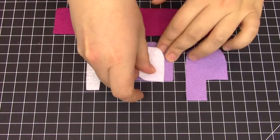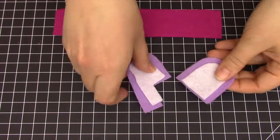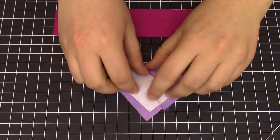You now have all of your pieces cut out. We will put the white pieces on top of the purple, and then overlap them to create a heart.